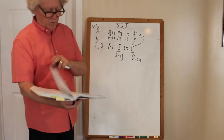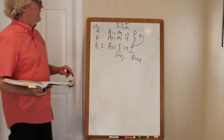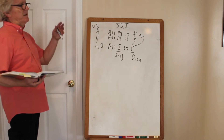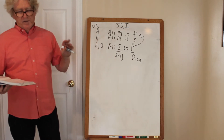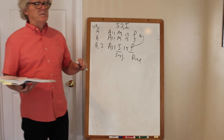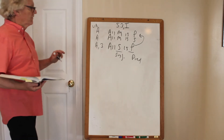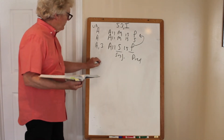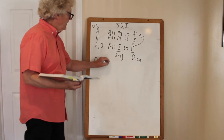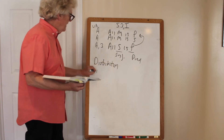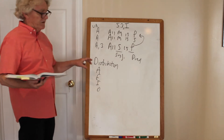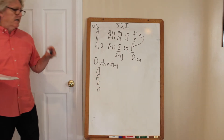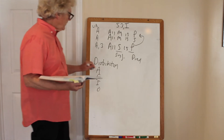Rule five — if both premises are universal the conclusion cannot be particular — we're not going to worry about just yet. But we do have to worry about distribution, something explained at the beginning of chapter four when we did categorical propositions. We know there are four types of statements: A, E, I, and O — universal affirmative, universal negative, particular affirmative, and particular negative.